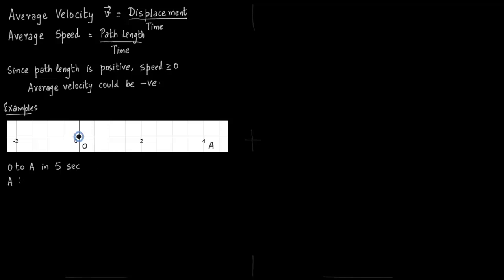And you go from A to O in 10 seconds. So the total time taken in the distance traveled from O to O is 15 seconds. Now displacement is 0 because you go from O and end at O.